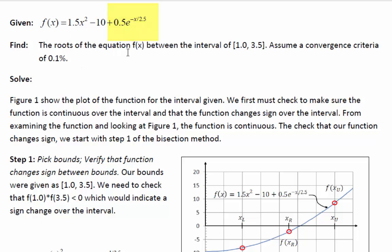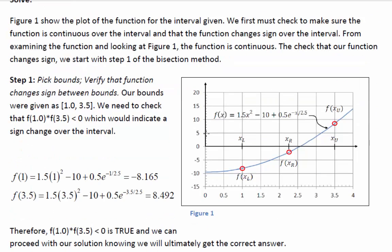We want to find the roots of the equation F(X) between the interval 1 and 3.5, and we want to assume a convergence criteria of 0.1%. This will be the approximate percent relative error. The figure here shows the equation between those bounds, 1 and 3.5. To get started, we need to evaluate the function at our bounds. We have F at 1 is -8.165, and F at 3.5 is 8.49.